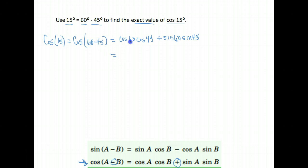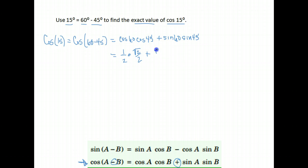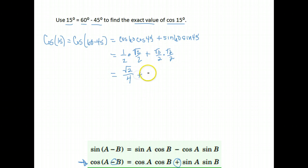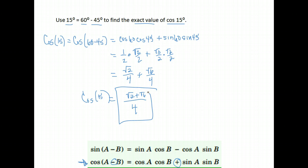That gives me: cosine of 60 degrees is 1 half, times cosine of 45 which is root 2 over 2, plus the sine of 60 degrees is root 3 over 2, times the sine of 45 degrees which is root 2 over 2. This gives me root 2 over 4, and here I get root 6 over 4. So my cosine of 15 degrees is the square root of 2 plus the square root of 6, all over 4. That is the exact value.